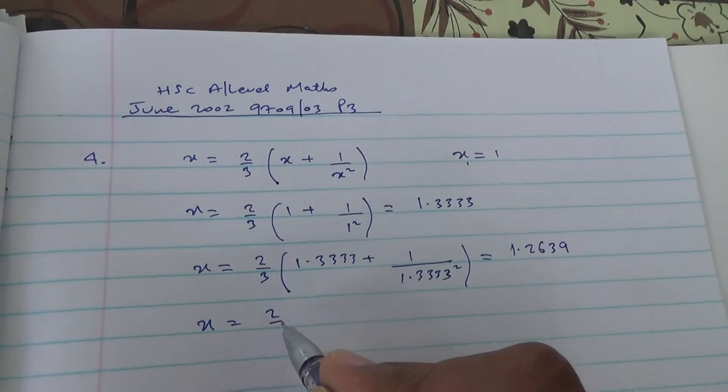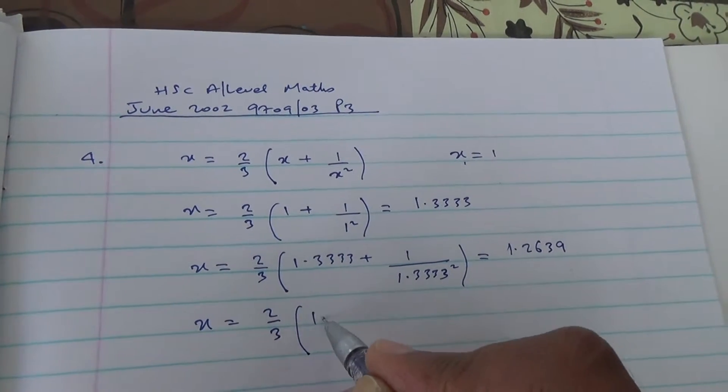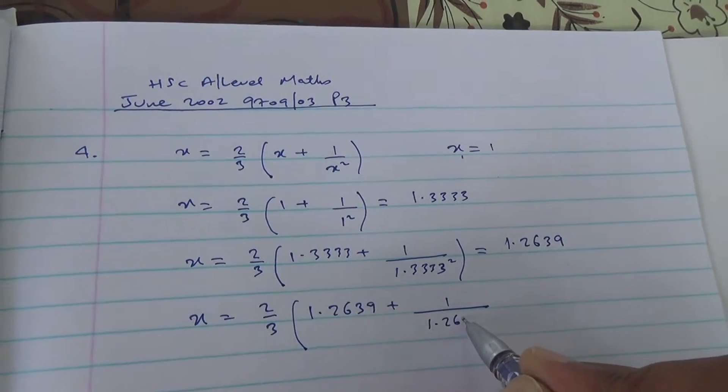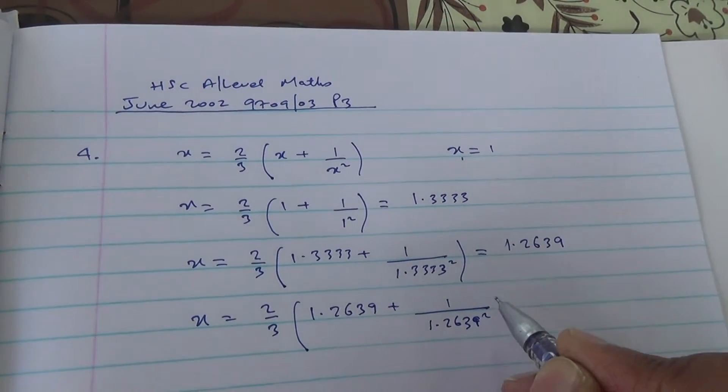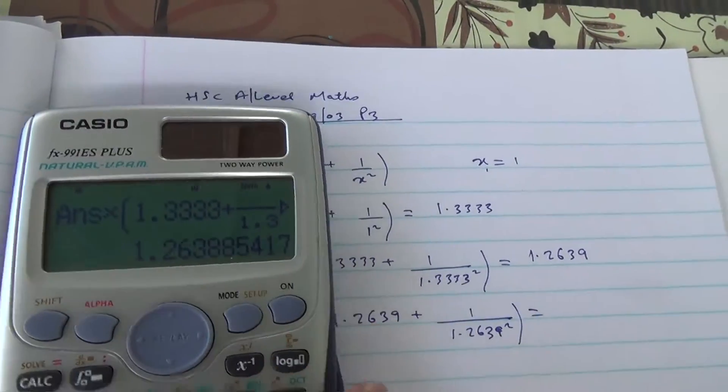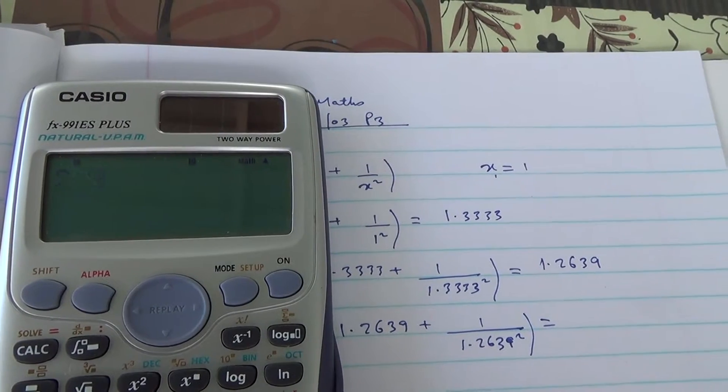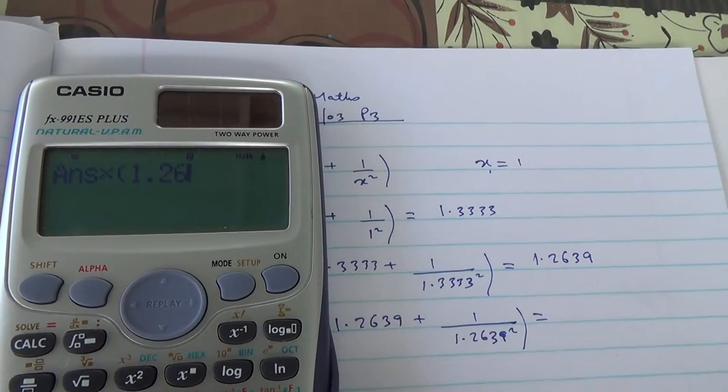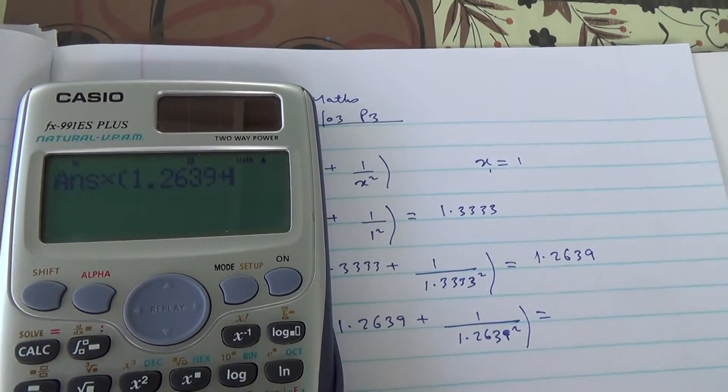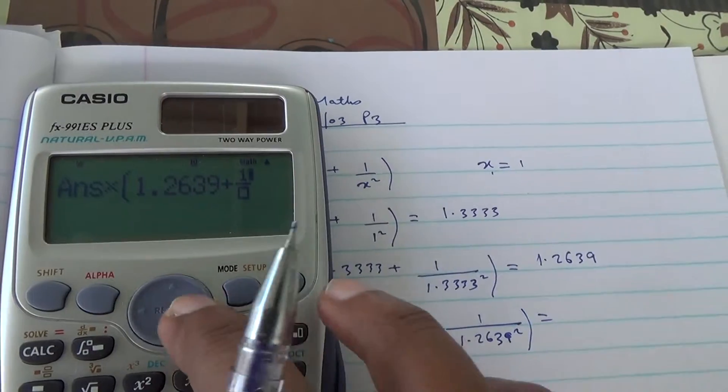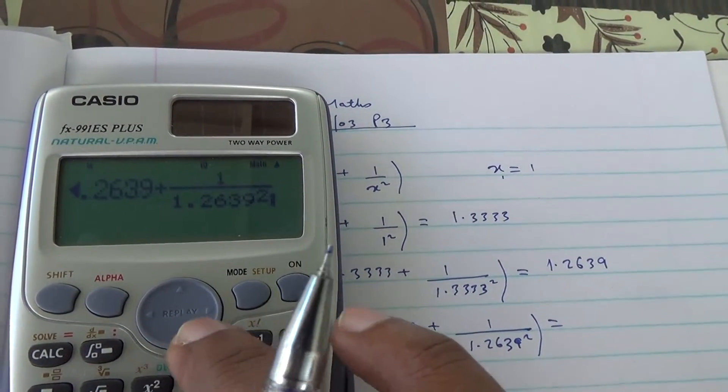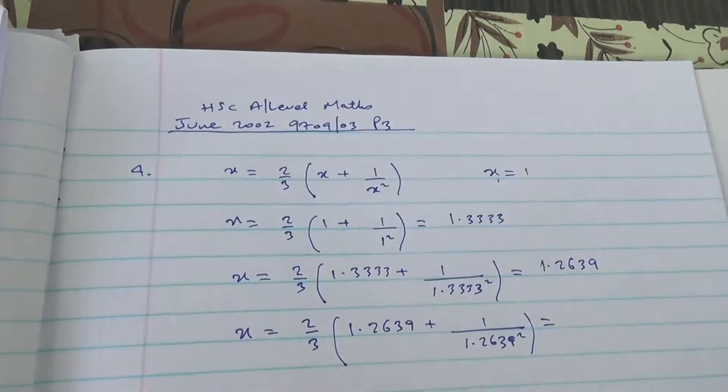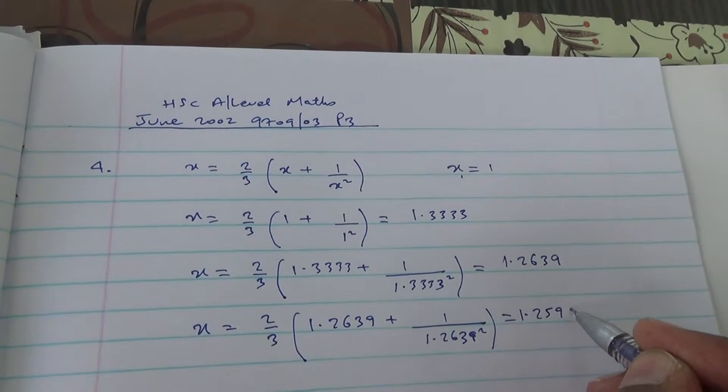Then you've got x is equal to 2 thirds into 1 point 2, 6, 3, 9 plus 1 over 1 point 2, 6, 3, 9 squared. That's going to give us 1 point 2, 5, 9.